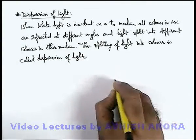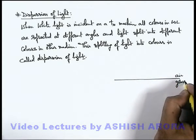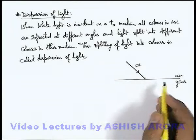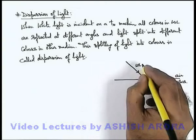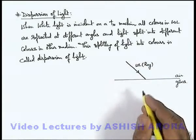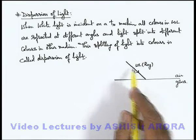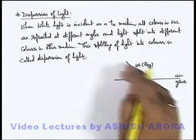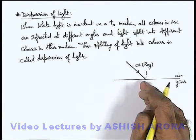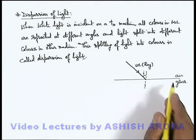Here we can see: if this is air and this is glass, and a white light is incident onto the air-glass interface — here I am considering this white light as a single ray; practically a ray is not possible, it is always a beam, which we will analyze in the next section — all colors which are the constituent colors of white light are incident on the normal at the same angle of incidence at this air-glass boundary.